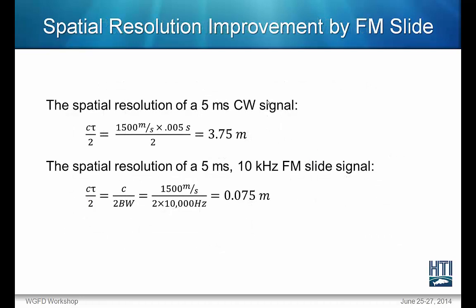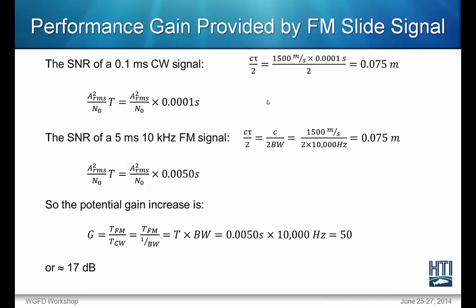As an example, the spatial resolution of a 5 ms CW signal and a 5 ms 10 kHz FM slide signal — both having the same power — are 3.75 m and 0.075 m respectively. This shows that with the same power, an FM slide signal has much finer spatial resolution. Likewise, a CW signal and an FM signal with the same spatial resolution vary in power: the output power of a CW signal has to be 50 times that of an FM signal of the same spatial resolution to achieve the same signal-to-noise ratio. This is a 17 dB increase when using an FM slide signal over a CW pulse.